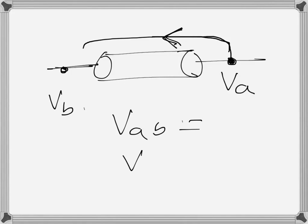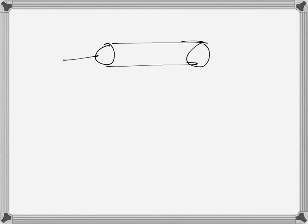Now we have the definition of voltage and the definition of current. For a conductor, it actually poses an opposition to the flow of current, and that is called resistance. It is a property of the material, and it varies depending on what the material is. Copper is a very good conductor, meaning it has less resistance — it is less resistive towards the flow of current. That property is given by rho (ρ), which is the resistivity.